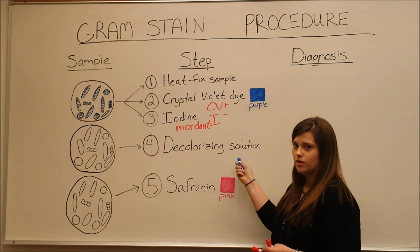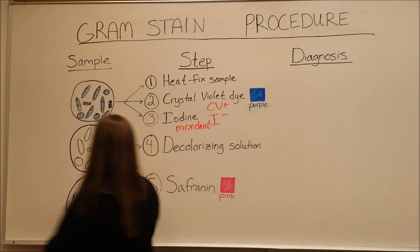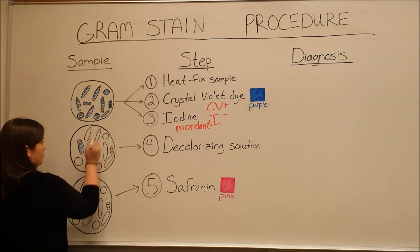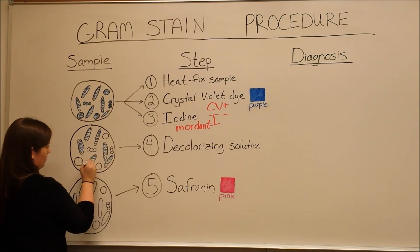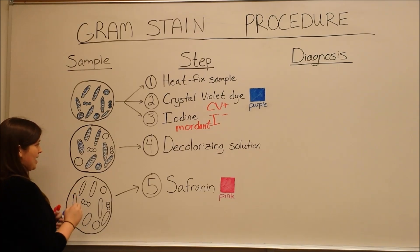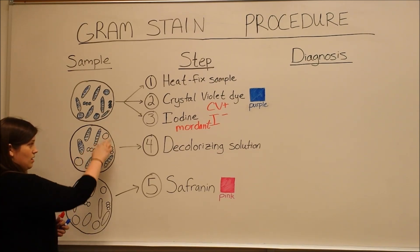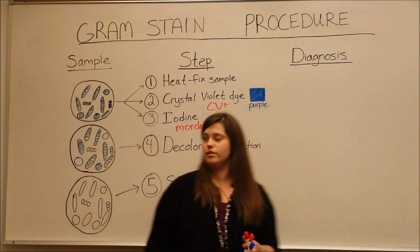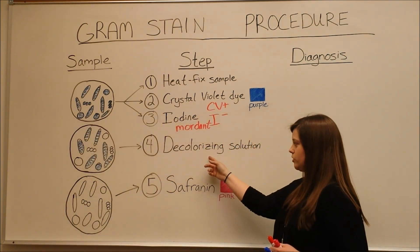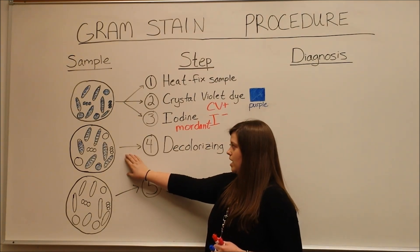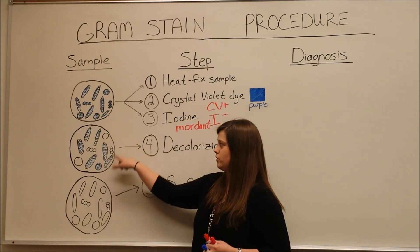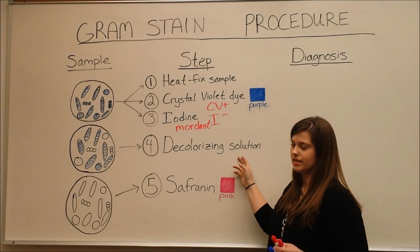After using this decolorizing solution, you have the gram-positive cells still retaining that purple crystal violet dye. Then you have gram-negative cells that are suddenly colorless again from the decolorizing solution. At this point, you can visualize which cells are gram-positive because they have retained this crystal violet dye after using the decolorizing solution.